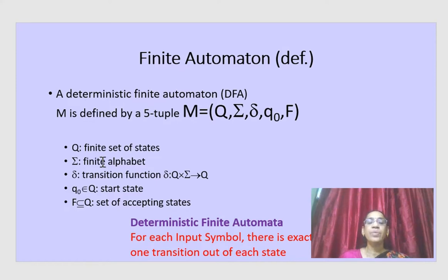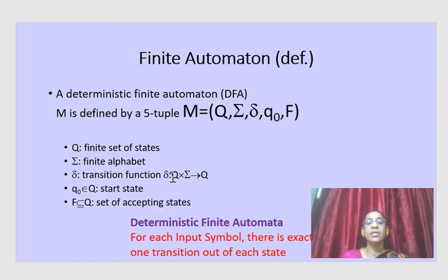Sigma is a finite alphabet, that is the input symbols — what are the input symbols accepted by the machine. And delta is the transition function. For each state with an input symbol, it will go to another state. This is Q cross Sigma — the cross product of states and input symbols — and it gives a state.